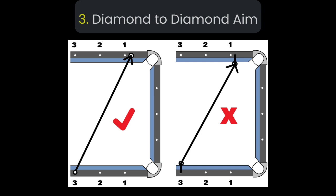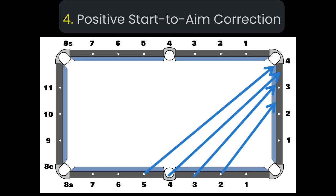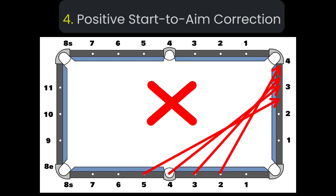Fourth, all aiming patterns have a positive correlation. That is, as the starting diamond goes up, the aiming diamond also goes up with it. They don't go in the opposite direction.